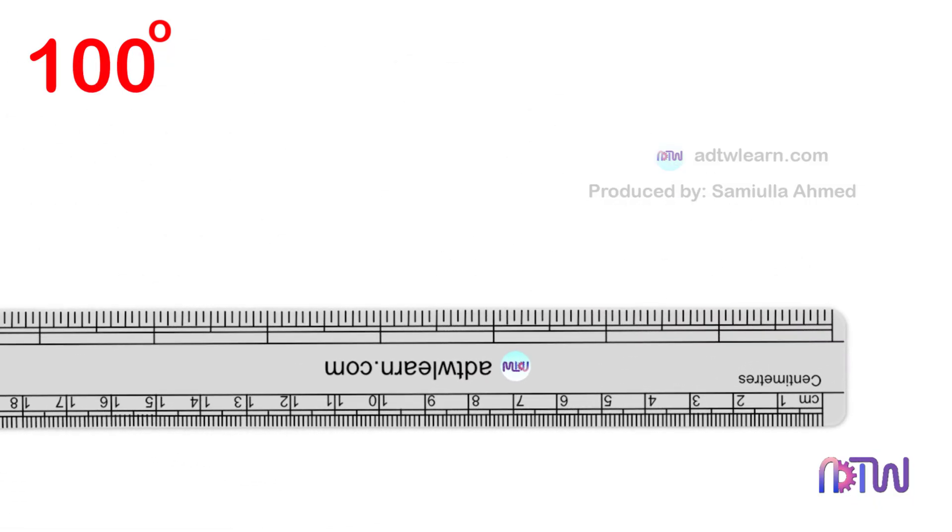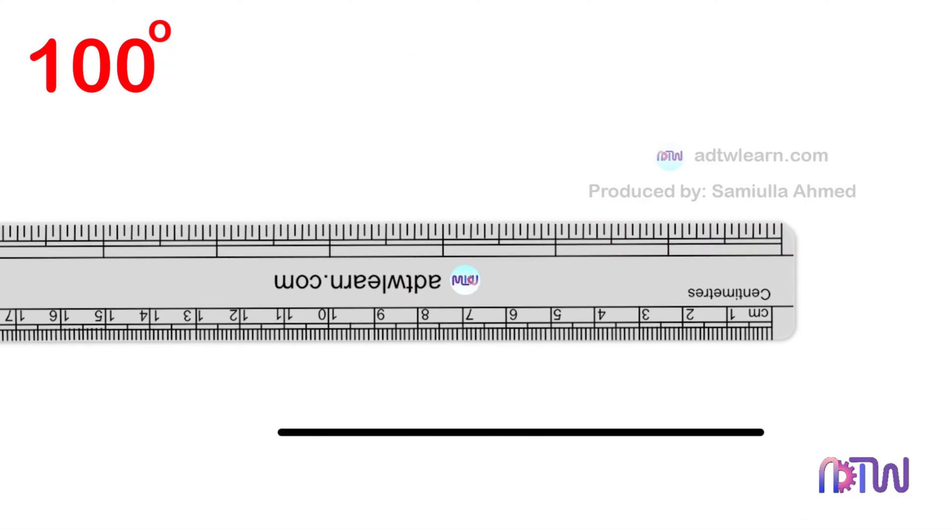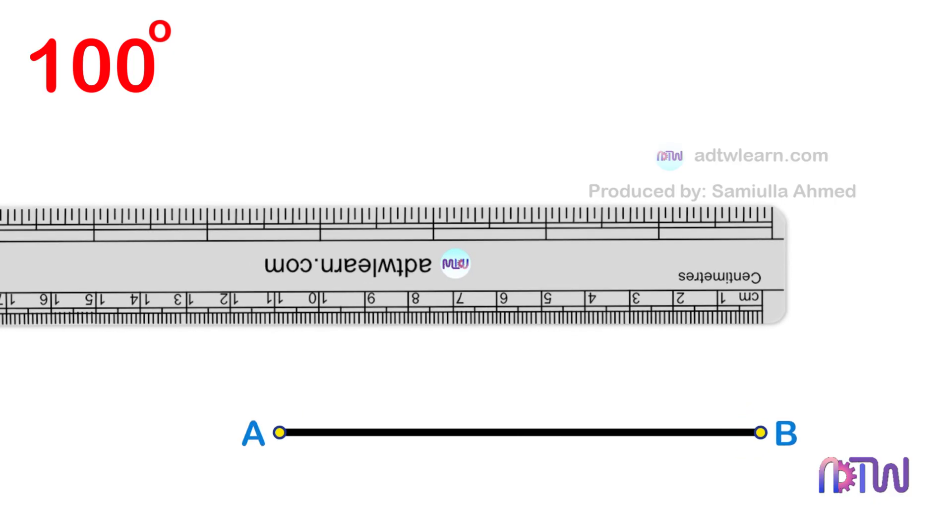First, we need to draw a line segment. To do so, take a ruler and draw a line segment. Label the endpoints as A and B. Extend this line to a suitable length.